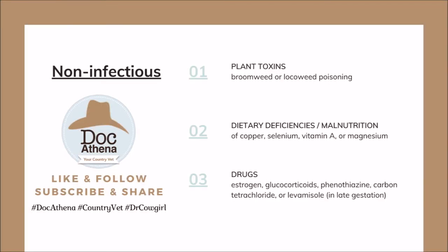Let's look at the non-infectious causes. Plant toxins — there are many different plant toxins, usually weeds present in your pasture area that could be ingested by your animal, resulting in abortion or poisoning. Next is dietary deficiencies or malnutrition, which could include deficiencies in vitamins and minerals such as copper, selenium, or magnesium.